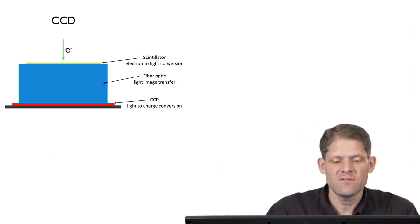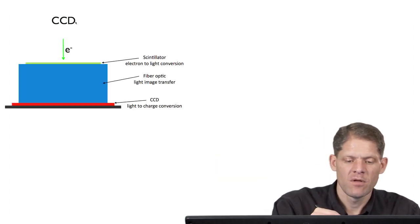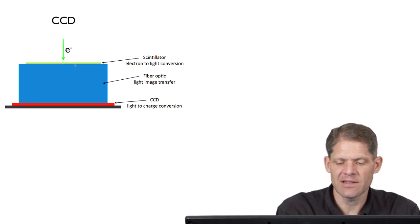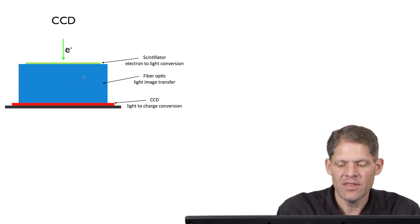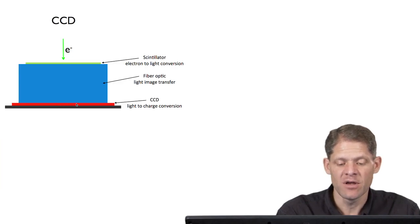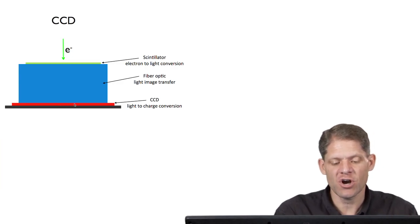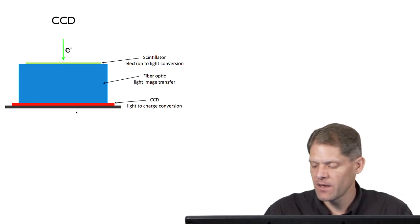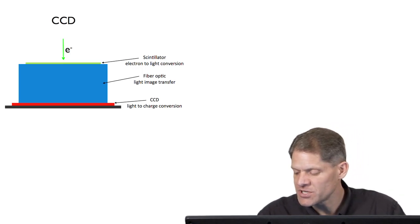In a CCD camera, the incident electrons first hit scintillator, where the electrons are converted to light, then they pass through a fiber optic bundle to transfer those photons to a CCD camera, where the light is converted to charges, which are then read out.